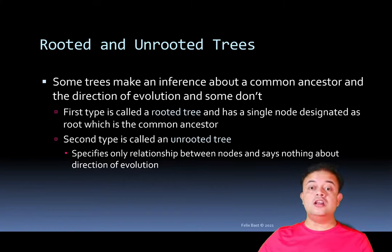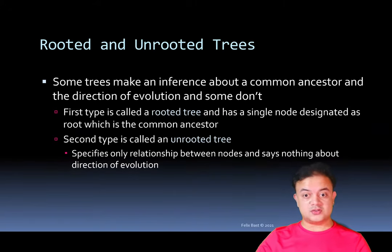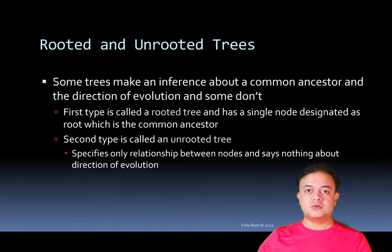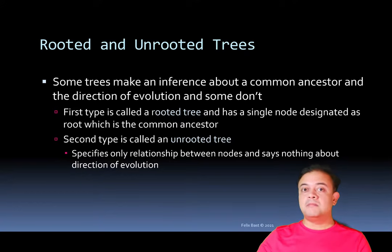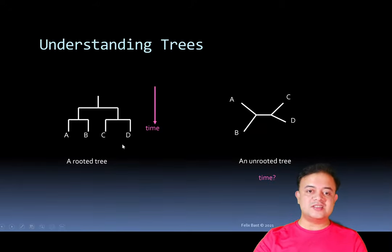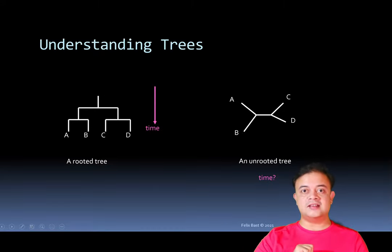An unrooted tree specifies only relationships between nodes and says nothing about the direction of evolution. In one sense, unrooted trees make fewer assumptions than rooted trees, making them simpler. Based on Occam's razor, unrooted trees are preferable in that sense, but they may not be as meaningful. A rooted tree can be more informative — you can see an explicit root showing the most recent common ancestor of the entire clade.